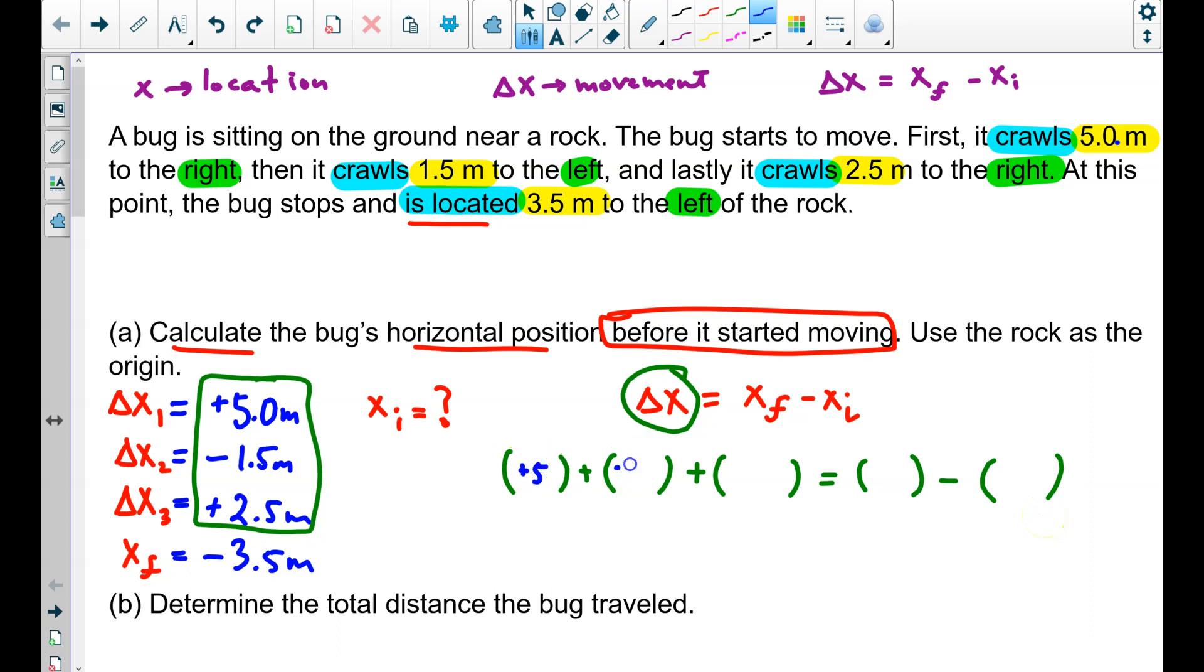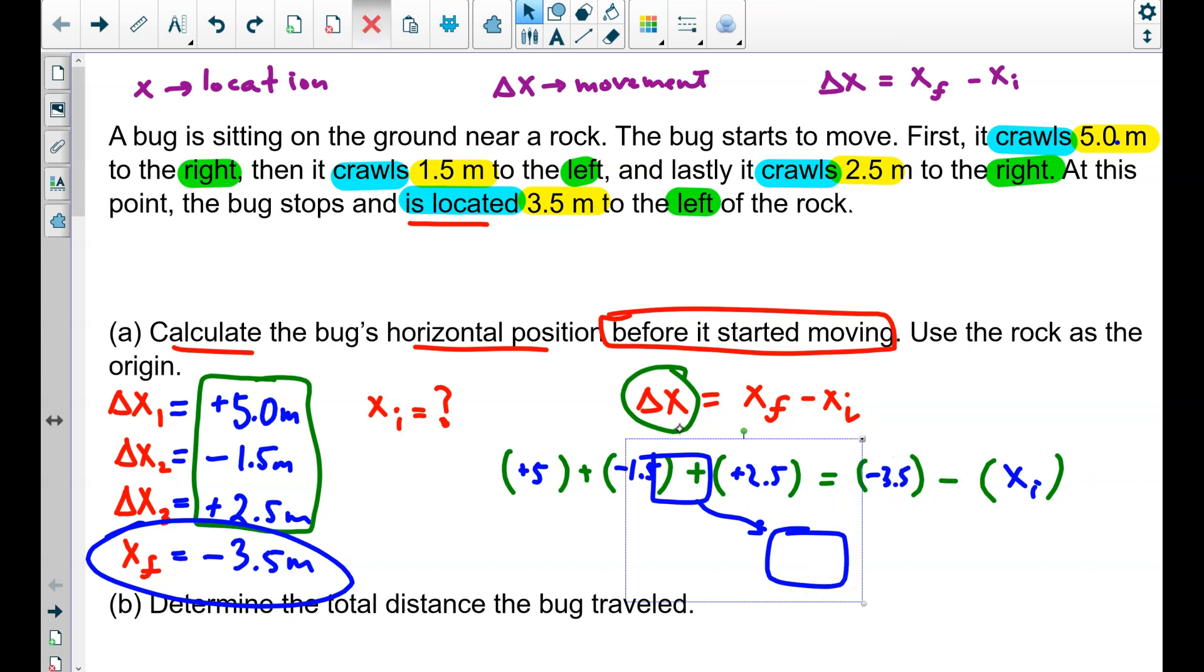We have positive 5. We have negative 1.5. Positive 2.5. And then this, what's this? x final or x initial? Oh yeah, this is x final. Do I know x final? Yes, I do. It's right there in my chart. Negative 3.5. And right here, I put x initial, which is my unknown. I do not know x initial, so I don't plug in for it.